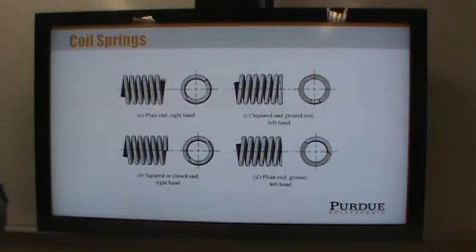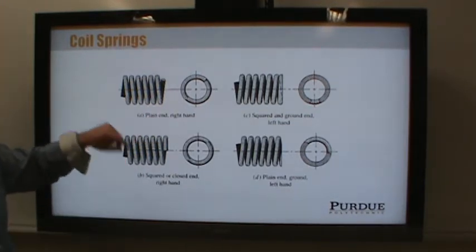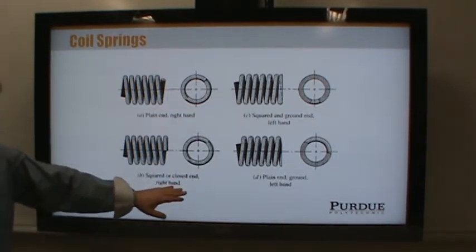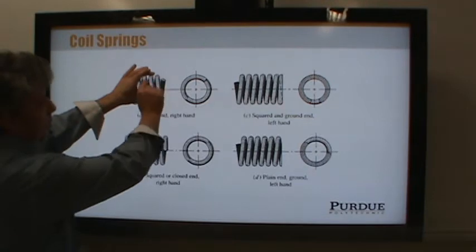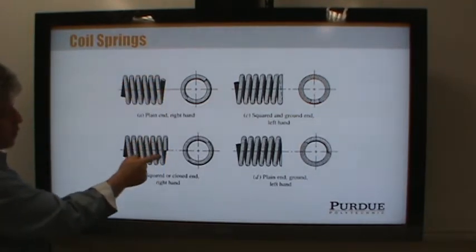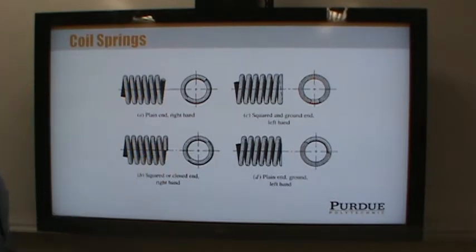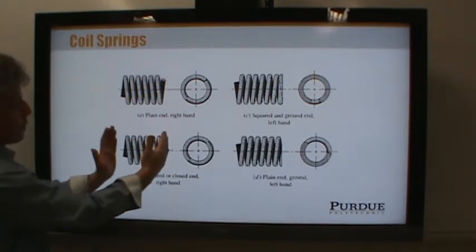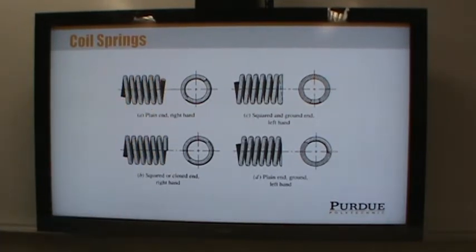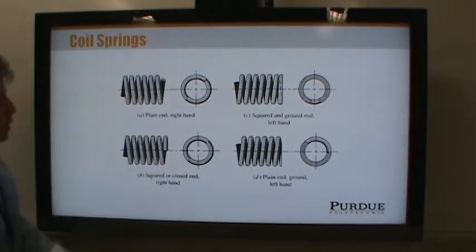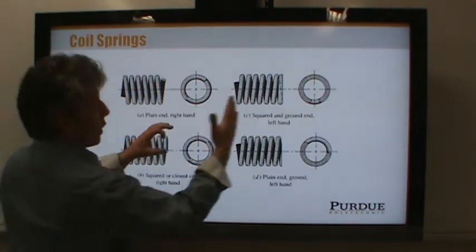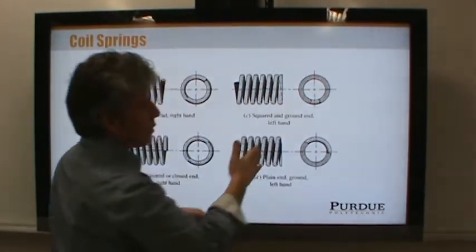Coil springs come in several different flavors of end treatment. You can just have plain ends where you basically have a coiled wire that's cut at either end. There's also squared or closed ends where the end coils are bent over so that they frequently touch the preceding coil. So basically, one whole coil is a dead coil. It doesn't participate in the spring action because this coil is already touching. That gives you somewhat of a flatter end in order to support the spring and apply force to it and prevent it from rotating.